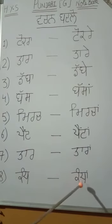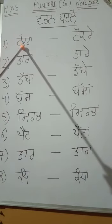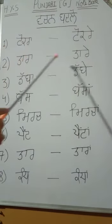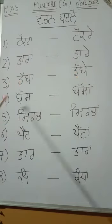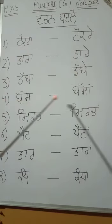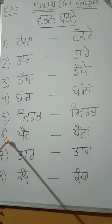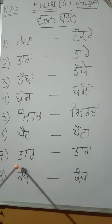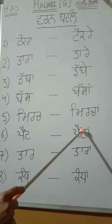Number 8: Kandhaan. Write carefully. I will repeat again. Number 1: Tokra — Tokre. Number 2: Taran — Tare. Number 3: Dabba — Dabbe. Number 4: Bas — Basan. Number 5: Mirch — Mirchan. Number 6: Pant — Pantan. Number 7: Tar — Taran. Number 8: Kand — Kandhaan. Bindi — write bindi on top two times.